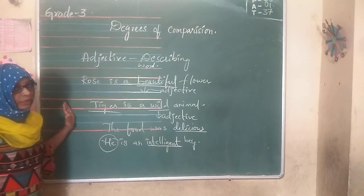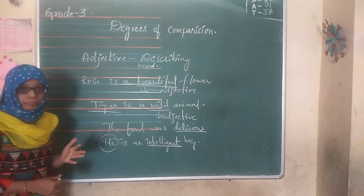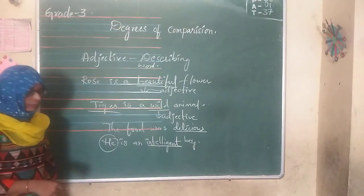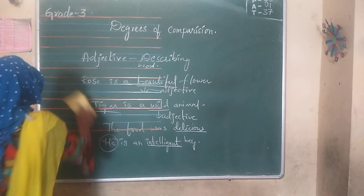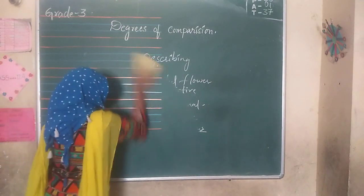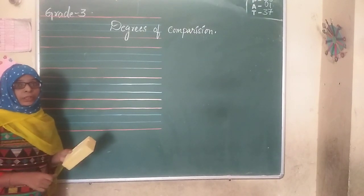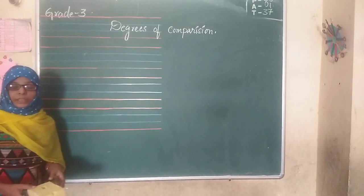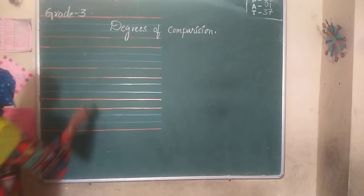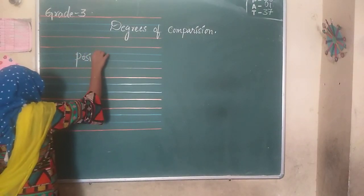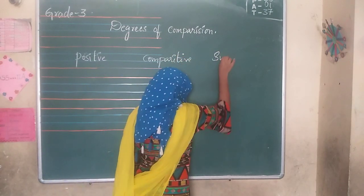The words which describe a noun or a pronoun are called adjectives. We also use adjectives in comparing — in comparison. Those are called degrees of comparison. There are three degrees of comparison. The first one is positive, the second one is comparative, and the last one is superlative.